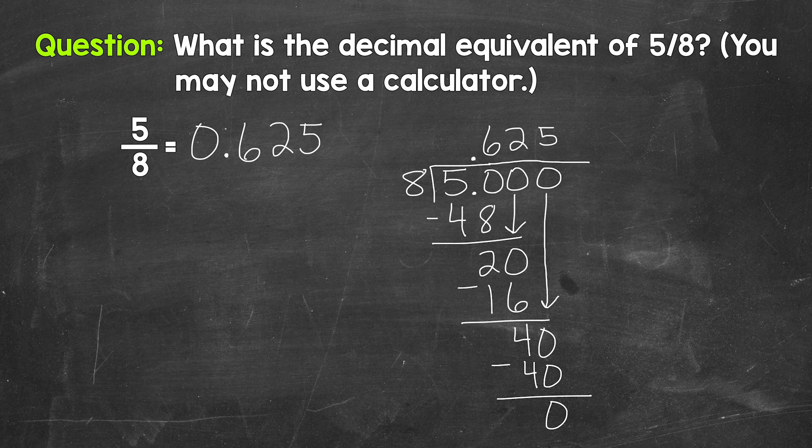Now you'll notice when I rewrote that answer, I put a zero in the ones place to show that we don't have a whole number here. This helps us recognize the decimal and see that this is not 625. So just something to keep in mind when you see that. So there you have it.